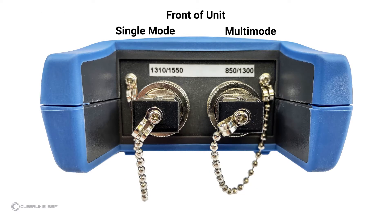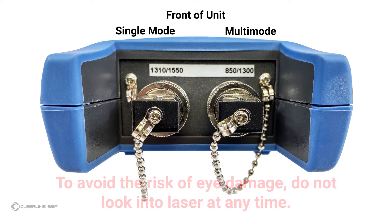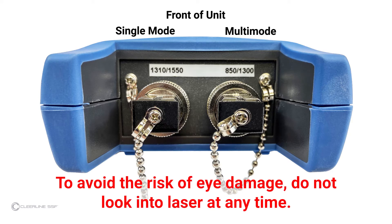The light source has two labeled outputs. The 1310 or 1550 nanometer port is used for single-mode OS2 testing. The 850 or 1300 nanometer port is used for multimode testing. Note that the laser does not operate at visible wavelengths — light will not be visible when the laser is active. To avoid the risk of eye damage, do not look into the laser at any time.